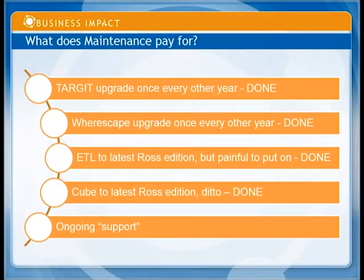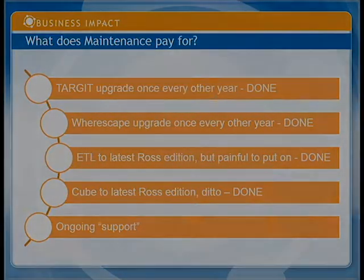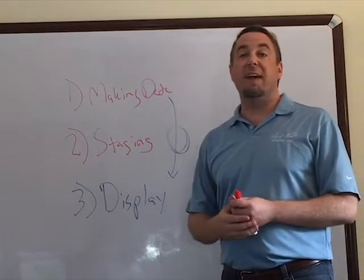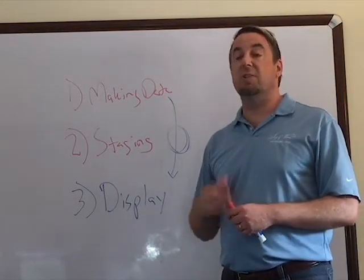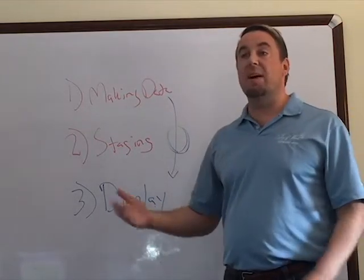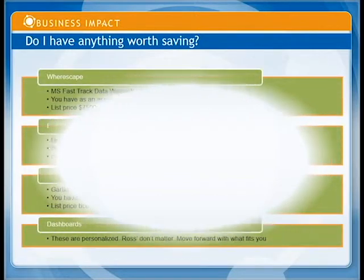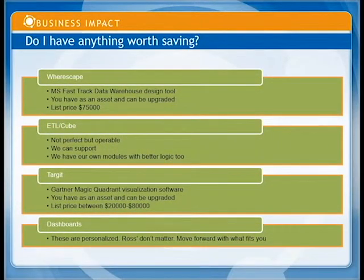Do you have anything worth saving? Yes. The Warescape tool continues to improve and allows for faster warehouse changes. Target has released version 2014. Both tools can be uplifted — you can migrate from an EPM license to a full license. As for the ETL portion that Ross charges for, there may not be much worth saving there. We can work with it and build off it, but I wouldn't recommend paying maintenance on it anymore.